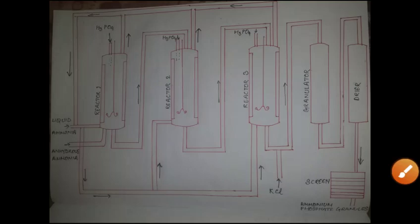In this video we are going to understand the manufacture of fertilizer, that is ammonium phosphate. Ammonium phosphate is also known as ortho ammonium phosphate or orthophosphate, and it is the salt of ammonia and phosphoric acid. It is water soluble.